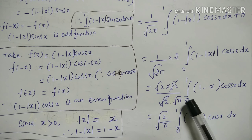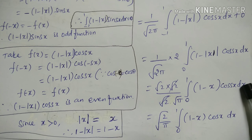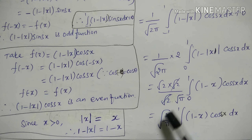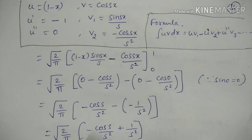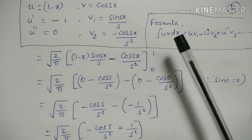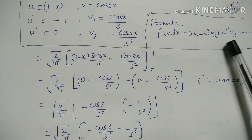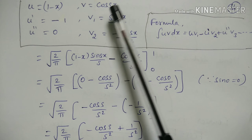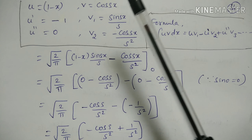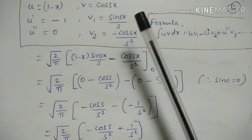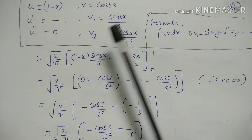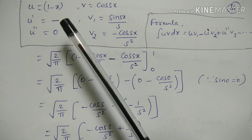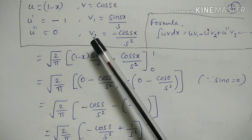Since (1 − |x|)·cos(sx) is even, the integral simplifies to (√2/√π) · integral from 0 to 1 of (1 − x)·cos(sx) dx, which equals √(2/π) · integral from 0 to 1 of (1 − x)·cos(sx) dx. We apply integration by parts: u = 1 − x, so u' = −1 and u'' = 0; v₁ = sin(sx)/s, v₂ = −cos(sx)/s².